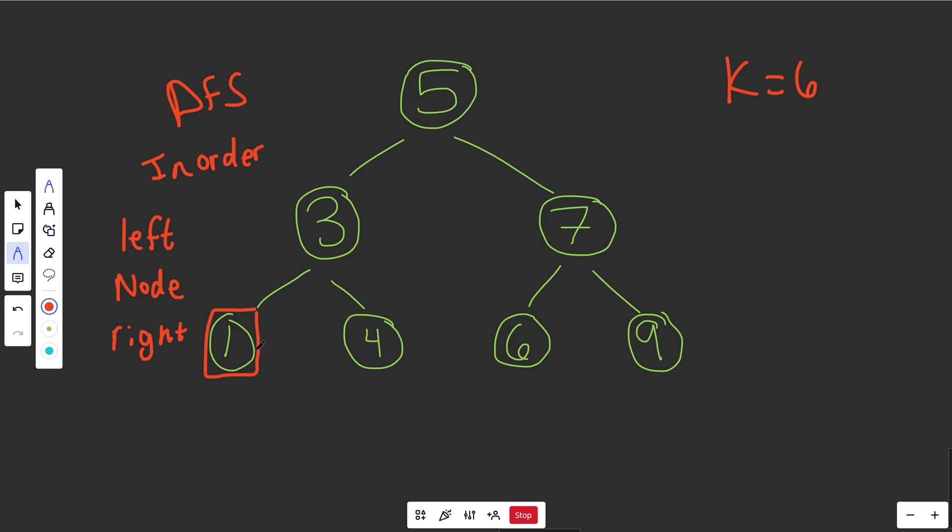So if we process this node here, okay, great. We've seen basically the first element, and for now we'll build up this array, and then we'll just return back over here. Okay, so this 3 saw its left as 1, and now it's ready to process itself. Okay, so itself is 3. Notice the second thing we processed is the second smallest element.